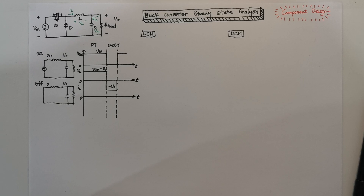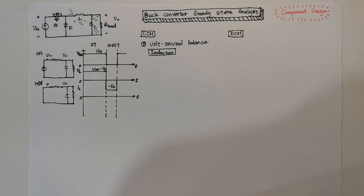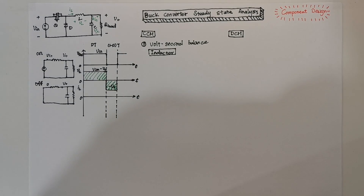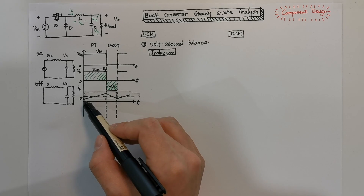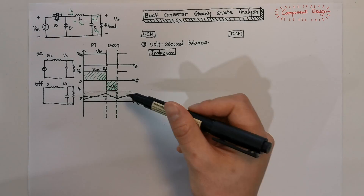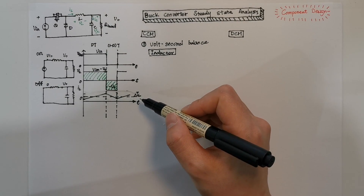In converter steady state analysis, we have two principles. The first one, applied to the inductor, is called volt-second balance. This principle means the average voltage applied on the inductor must be zero. On the plot, it means the areas of these two regions should be equal. Then we can plot the inductor current. We first assume the current increases linearly on the inductor, so we have a current waveform like this. As the average voltage is the same, the current starts from one point and after the same cycle it goes back to that point again. The difference between the maximum and minimum current values is delta I_L — we call this the current ripple.